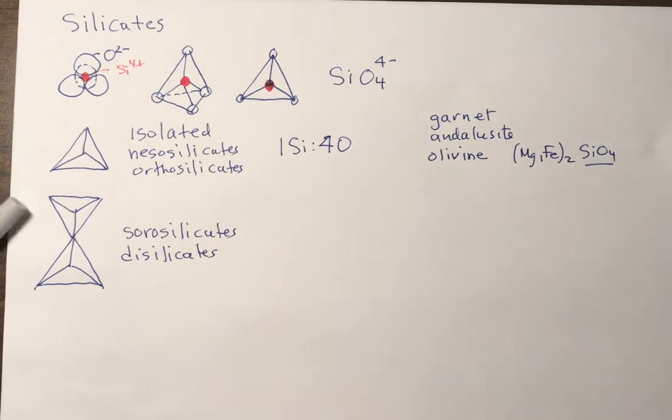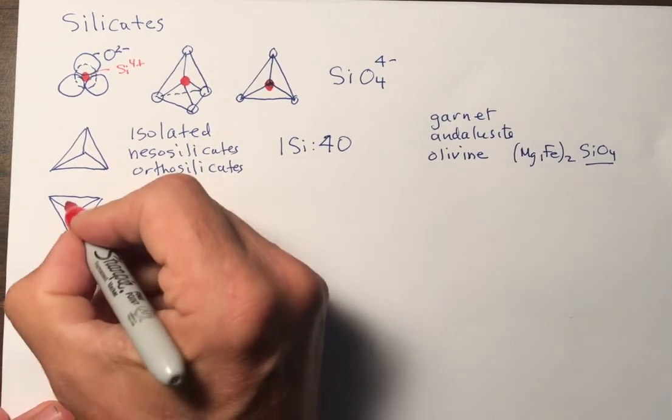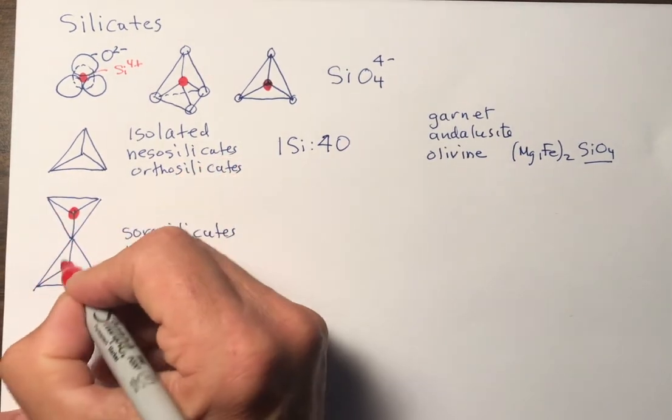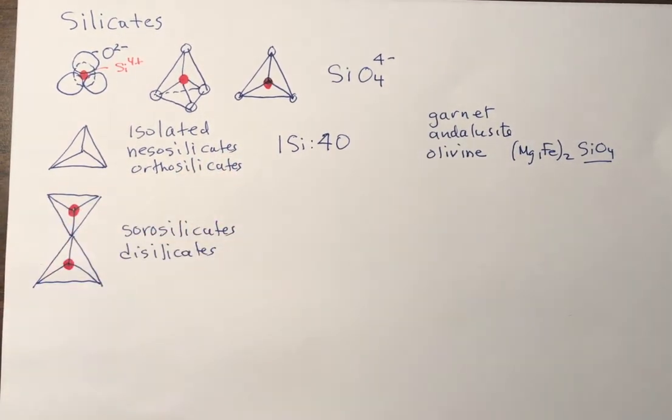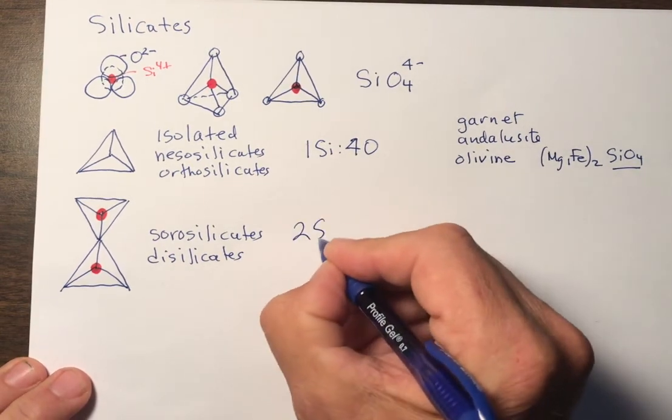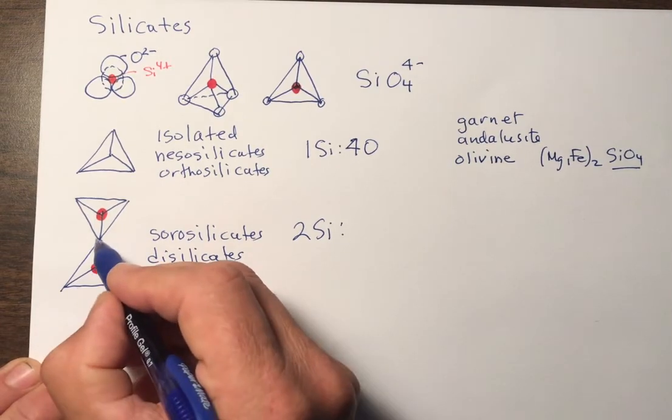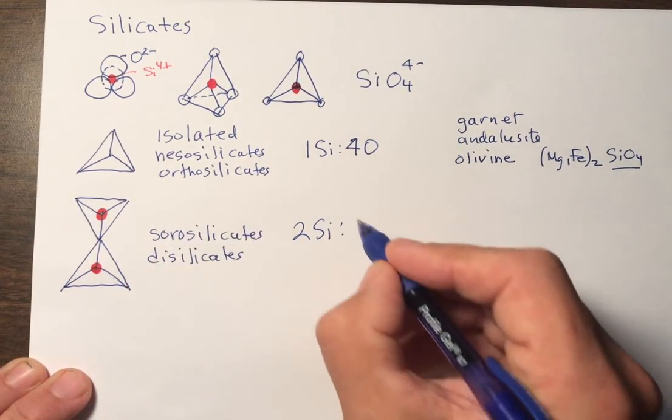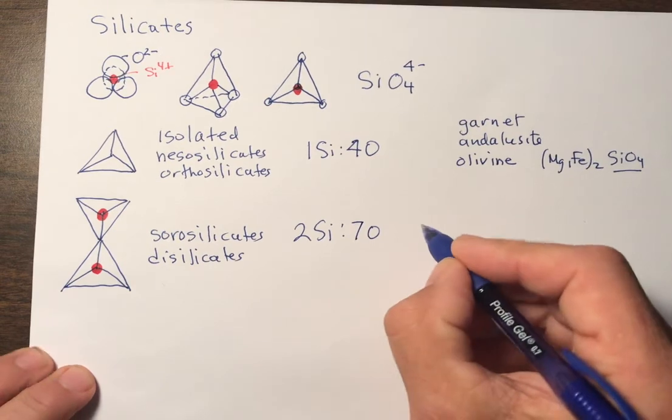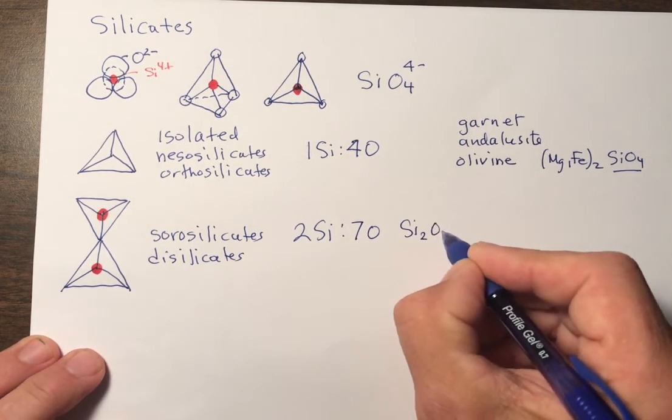In the basic stoichiometry, we can see it like this. Here's the oxygen in the center, I'm sorry, silica in the center. And the stoichiometry would be two silica, coordinated with one, two, three, four, five, six, seven oxygens. So that stoichiometry is Si2O7.